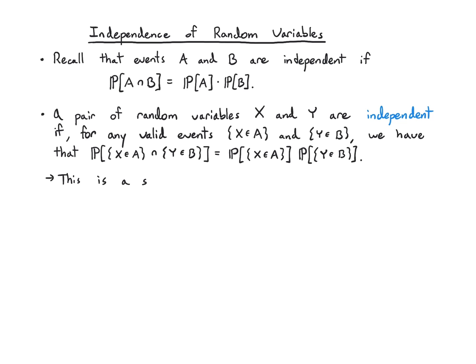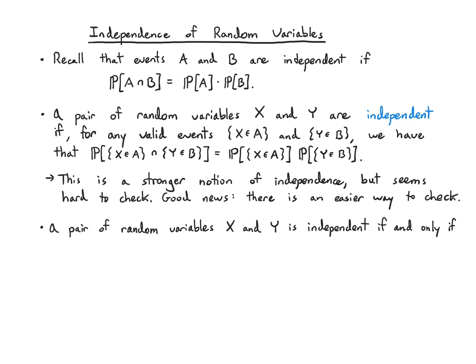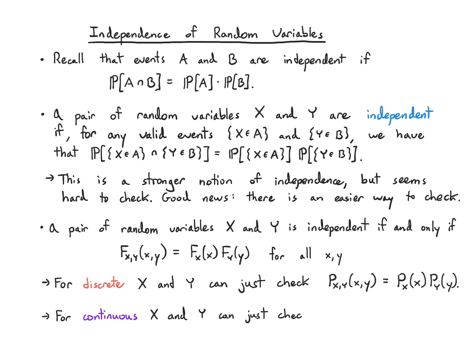This is a stronger notion of independence and it seems hard to check, because instead of being given the events, it needs to hold for every event you could ever come up with. But the good news is it's actually easier to check than you'd think. A pair of random variables X and Y is independent if and only if their joint CDF factors as the product of the marginal CDFs. For discrete X and Y, the joint PMF factors as the product of the marginals; for continuous X and Y, you check that the joint PDF f(x,y) equals the product of the marginals f(x) and f(y).